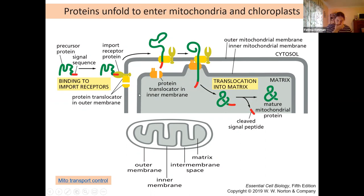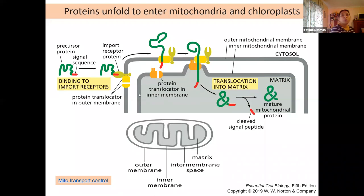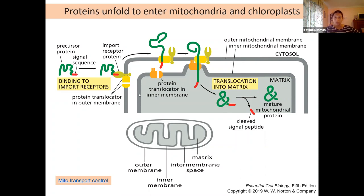In these places, proteins can't just go through like they could with the help of a nuclear pore. They actually have to unfold completely into their primary structure and then get translocated into the inner membrane. This happens again with the help of a signal sequence present on your polypeptide chain that targets it to the mitochondria or the chloroplast. That signal sequence is again going to be recognized by an import receptor protein.